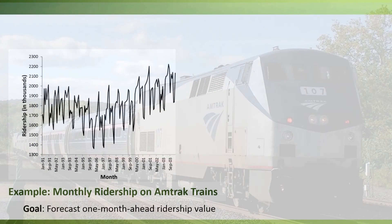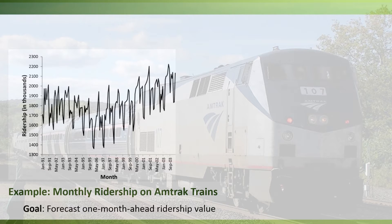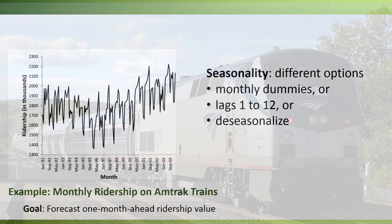For example, if we return to our Amtrak ridership case, because this series had monthly seasonality, we need to choose how to capture it. One option is to use monthly dummies. Another option is to use lags, such as lag one all the way up to lag 12.